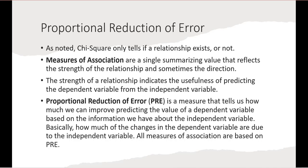Chi-square only tells us if a relationship exists or not. To get strength and direction, we need measures of association — a single summarizing value that reflects the strength of a relationship and sometimes its direction. The strength of a relationship indicates the usefulness of predicting the dependent variable from the independent variable. All the measures of association we will discuss are based on proportional reduction of error, or PRE.